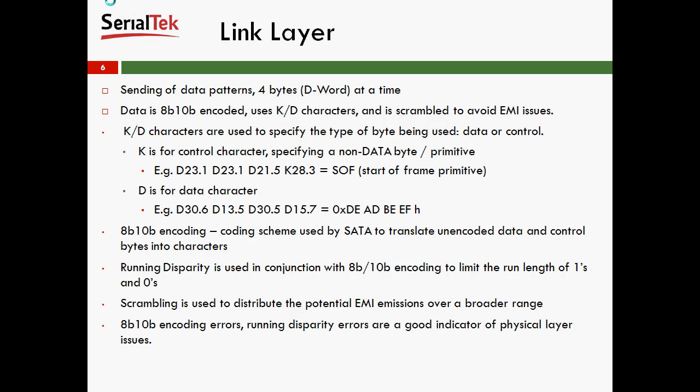If there's a K character, it means it's a control character specifying a non-data byte or primitive. For example, D23.1, D23.1, D21.5, and then K28.3 equals SOF — which we'll learn later means it's the start of frame primitive. D is for data character, and as you see below, there are four different Ds here which equal this value. 8B/10B encoding is a coding scheme used by Serial ATA to translate unencoded data and control bytes into characters.